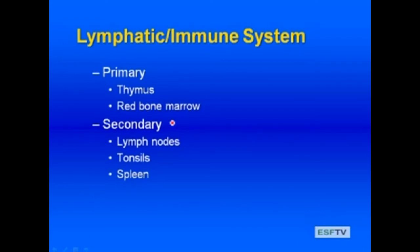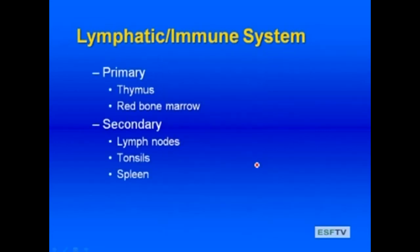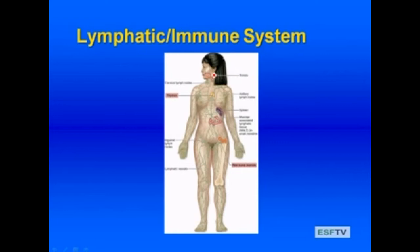The lymphatic or immune system is incredibly important. The primary organs include the thymus and the red bone marrow, where our white blood cells originate and mature. Secondary organs include lymph nodes, tonsils, and the spleen. Lymph nodes are present around the hips, underneath the arms, and as cervical lymph nodes in the neck.